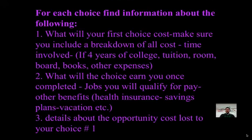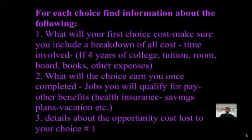For each choice, find information about the following. What will your first choice cost? Make sure to include a breakdown of all the costs and time involved — for example, if four years in college: tuition for four years, room and board for four years, books, and other expenses. What will the choice earn you once you have completed it? Jobs you will qualify for, pay, other benefits, health insurance, savings plans, vacation, etc.